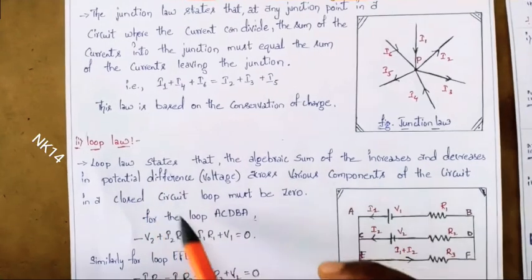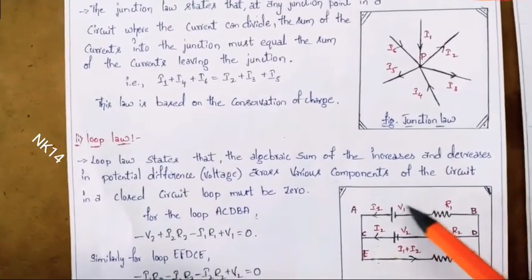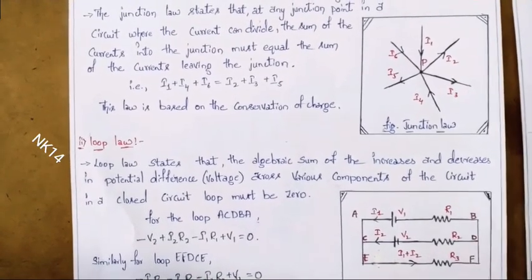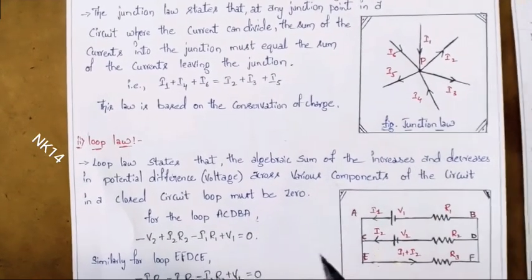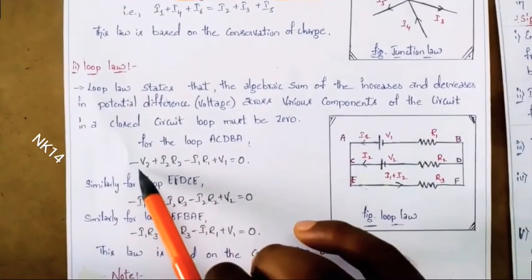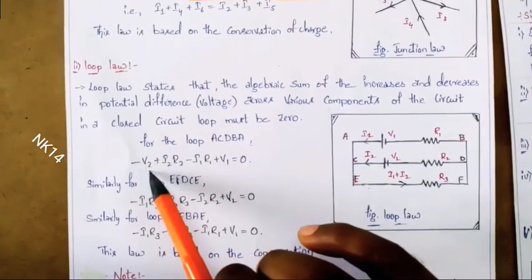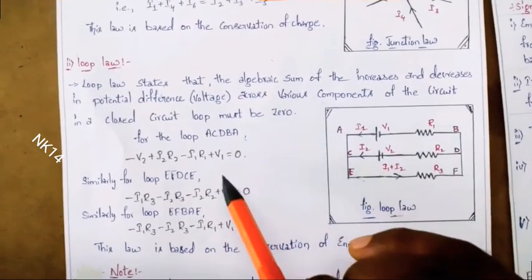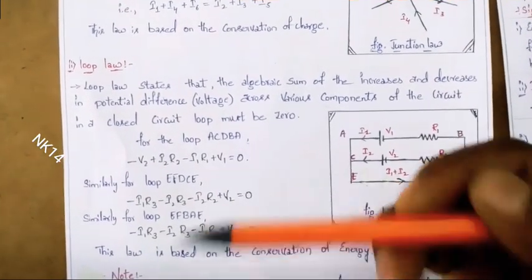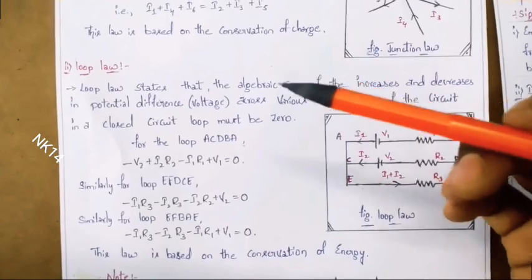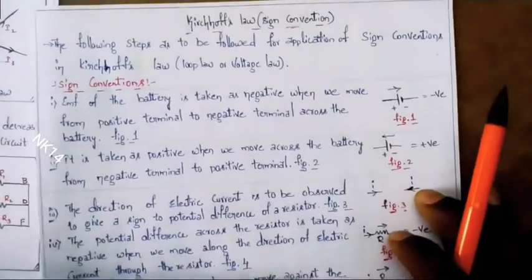Coming to loop's law: the algebraic sum of the increases or decreases of the voltage at any components will be equal to zero. From the loop's law, we applied some sign conventions and we got the values. For one loop, we got minus V2 plus I2 R2 minus I1 R1 plus V1. So I already said that in my next video I will upload a video related to sign conventions used in the Kirchhoff's laws. So let's go to our topic: sign conventions used in the Kirchhoff's laws.